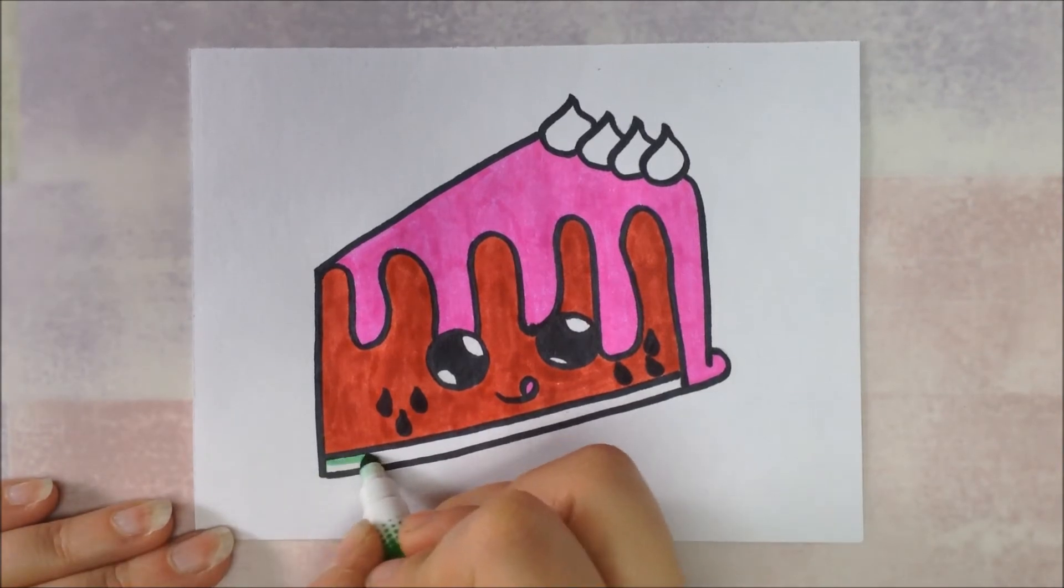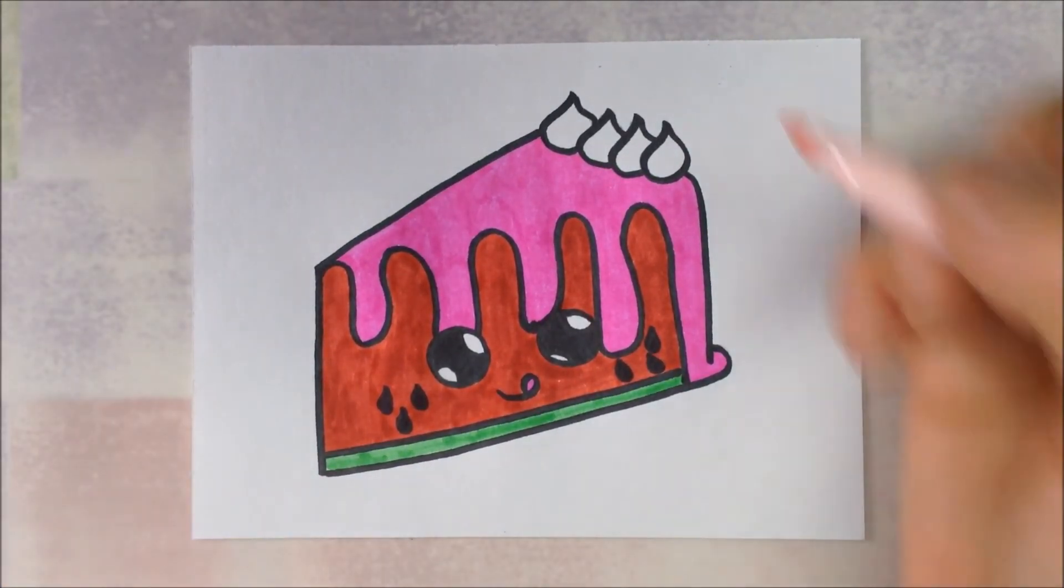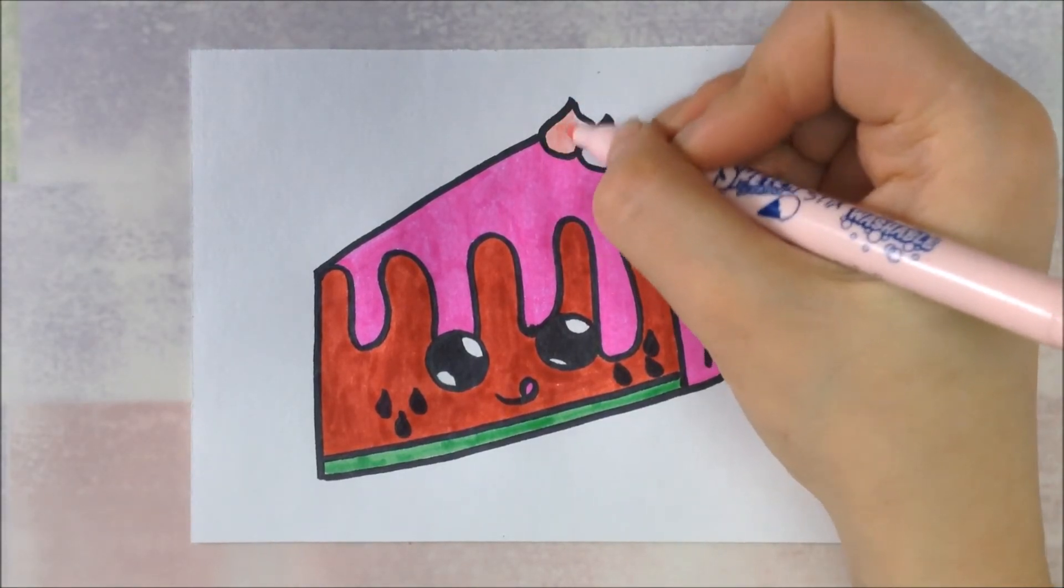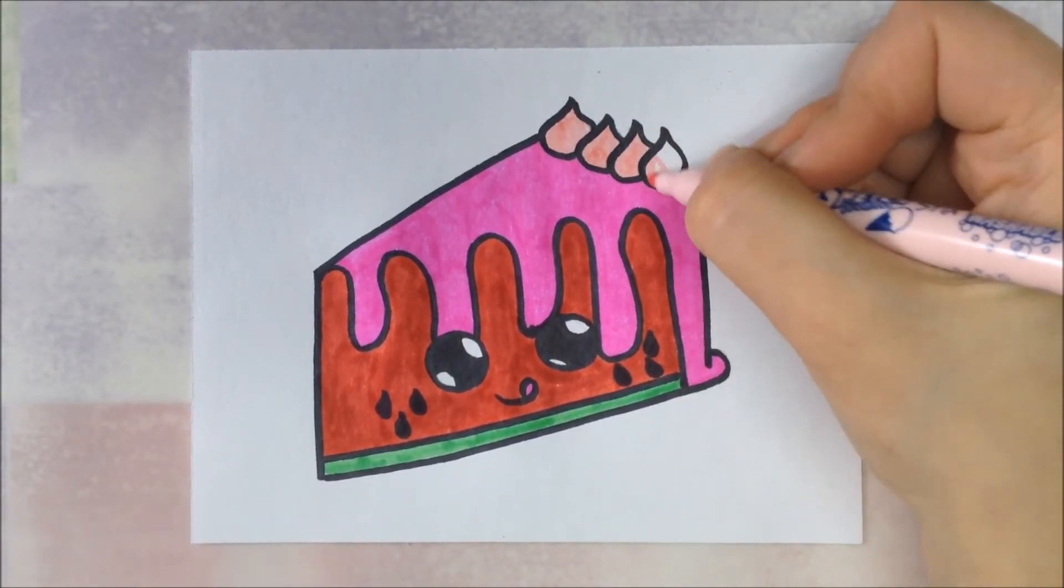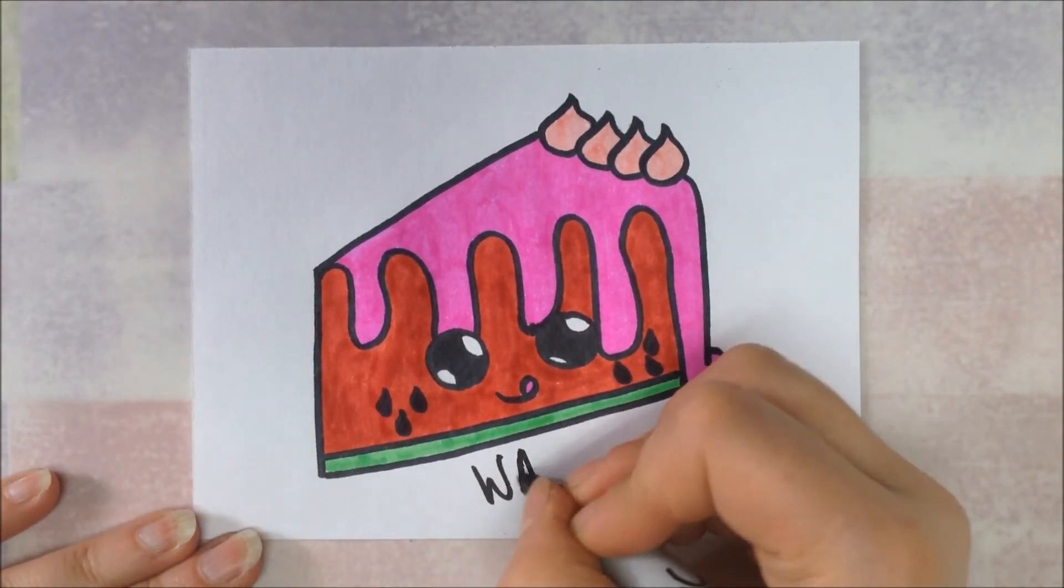And a little green on the bottom for the rind. And then for my little dollops I chose a light pink. And again, you can choose any color you want for that part. And your watermelon cake is done.